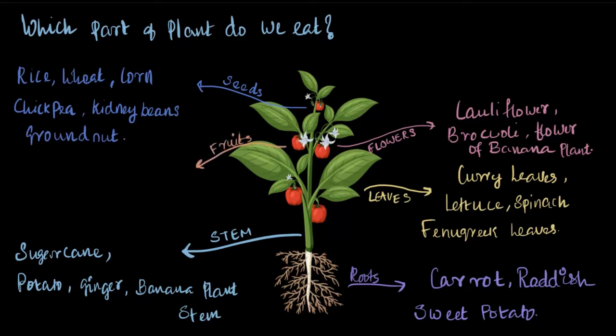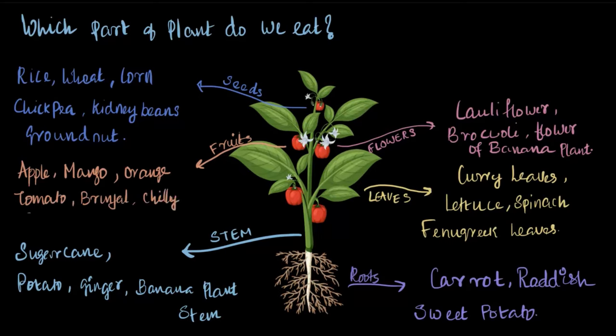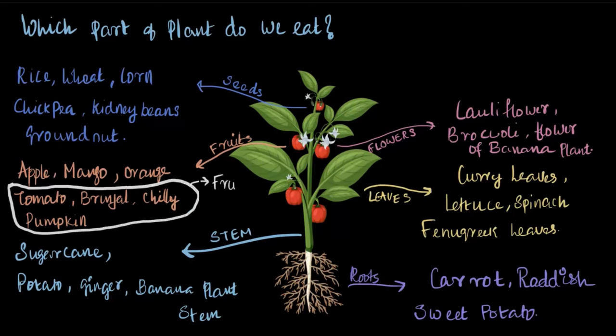In fruits, what examples can we discuss? We know that apple, mango, and orange are some examples of fruits. And again, tomato, brinjal, chili, and pumpkin are some other examples of fruits that we consume as food. These are fruits that we serve as vegetables in our daily life — tomato, brinjal, chili, and pumpkin — you might know they are classified as vegetables, but if you look at them as part of a plant, they are actually fruits. We call them vegetables, but they are actually the fruit of a plant.